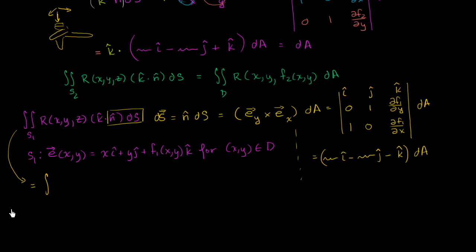I can now write is going to be equal to the double integral over the domain, our parameter's domain in the xy plane, of r of x, y. Instead of z, I'm going to write z over that surface is f1 of x and y, so that we have everything in terms of our parameters, times all of this business, k dotted this.